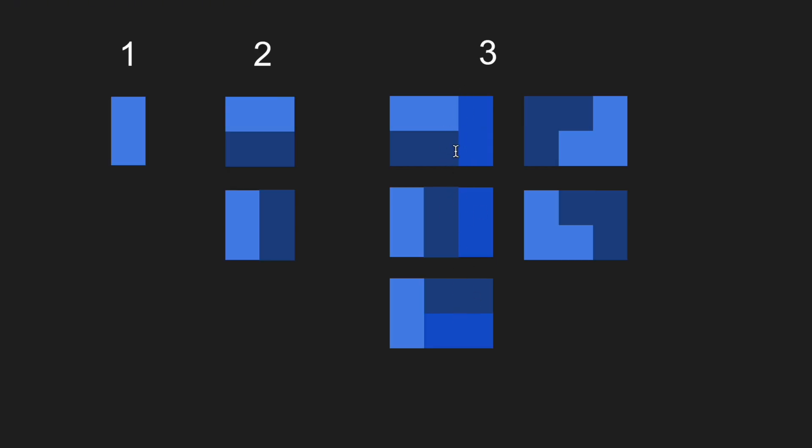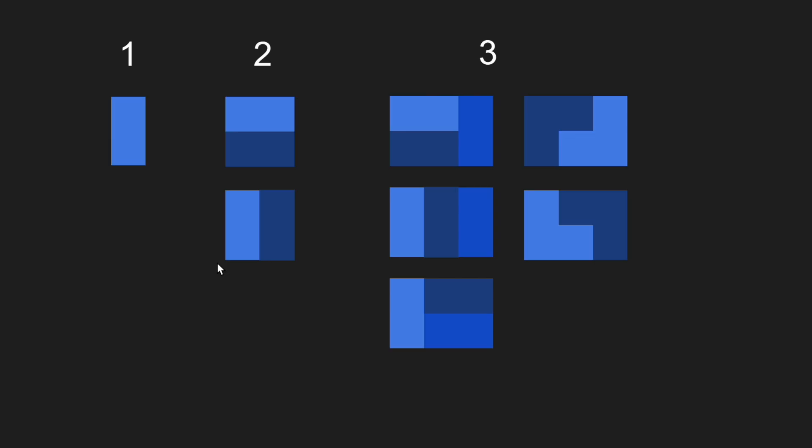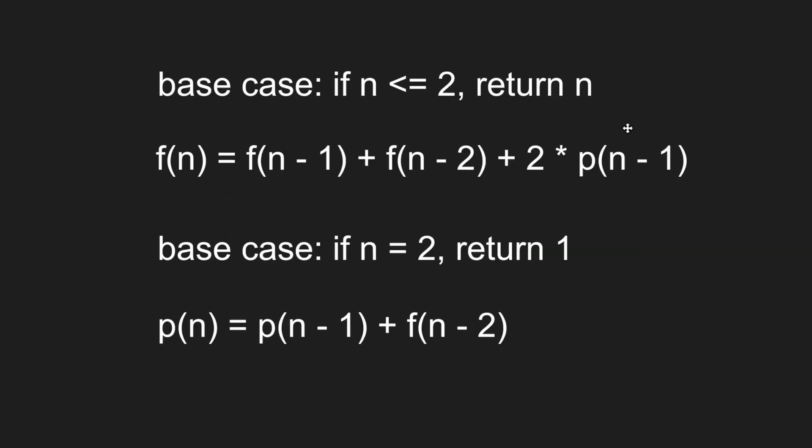So right here, these are the columns that are fully filled. And if we look at this column right here, it will be partially filled if we don't include this tromino tiling. So for the f function, one and two will be our base cases. So if it is one, we return one. If it's two, return two. So right here, these two will be our base cases. And for our p function, the base case will be if n is equal to two, then we will return one.